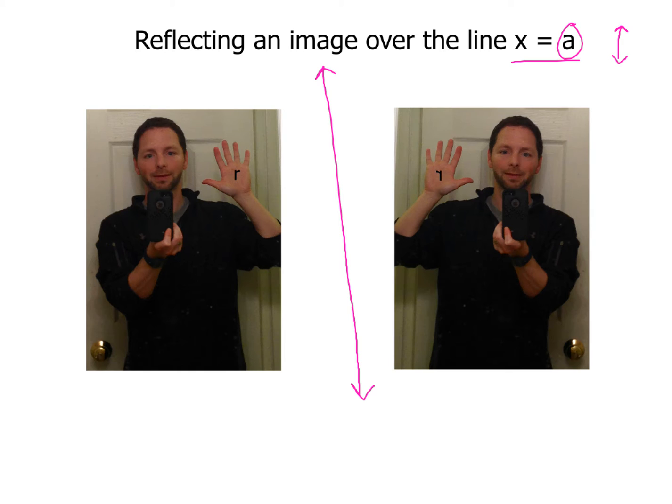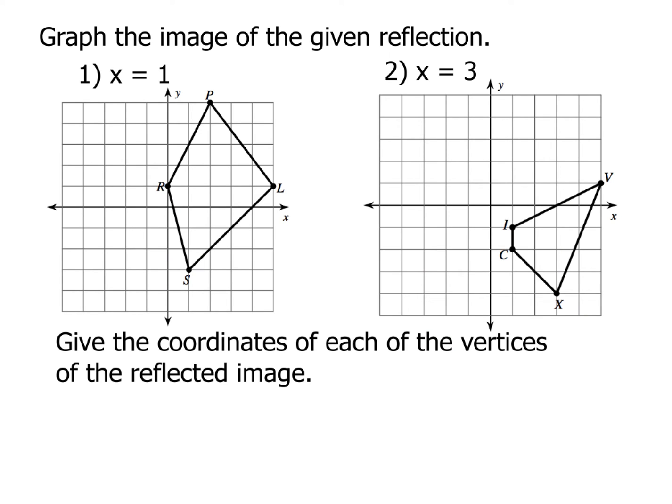But we're going to have to pay attention to not just how things get flipped but also maybe the coordinates, how they change. So let's take a look at two examples to practice those two ideas. So here we're going to graph the image over the given reflection. In example one, we have line x equals one. So what I want you to do is find where the line x equals one is from the origin. And I want you to go ahead, get out a marker and simply just draw a vertical line at the line x equals one.